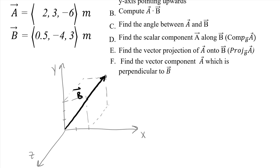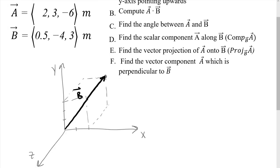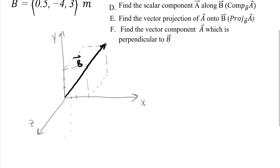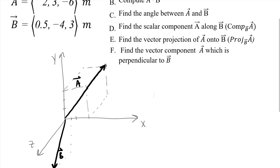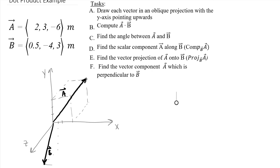Vector A has positive 0.5 as its first component, then negative four going downward, and then forward three in the Z direction. Vector B has components two in X, three in Y, and negative six in Z. So there are vectors A and B in the oblique projection, where X and Y are in the plane of the page and Z is coming out toward you.